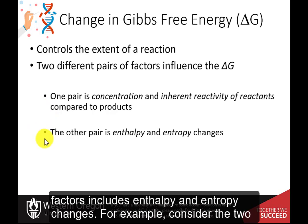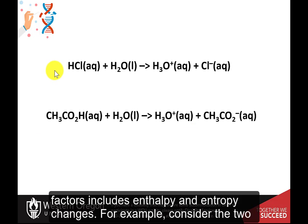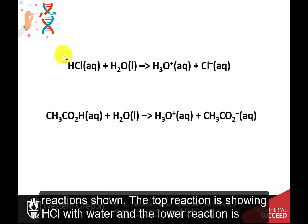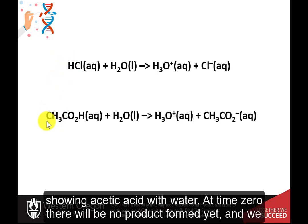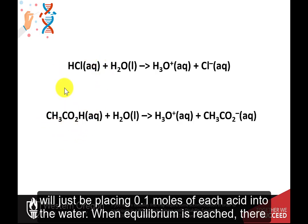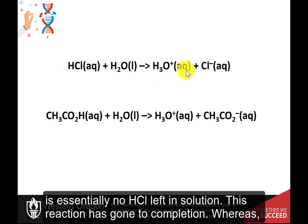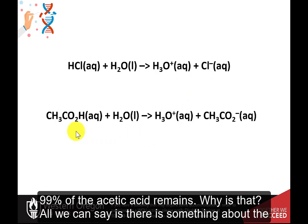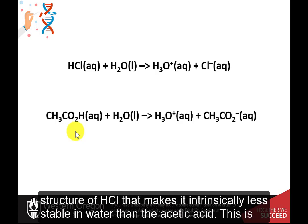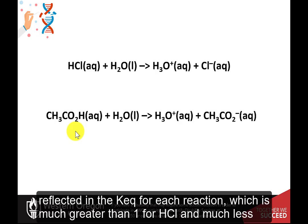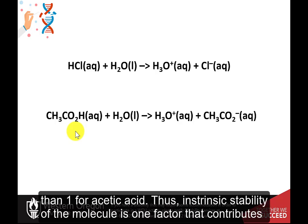The second pair of factors includes enthalpy and entropy changes. Consider the two reactions shown: the top reaction shows hydrochloric acid with water, and the lower reaction shows acetic acid with water. At time zero, placing 0.1 moles of each acid into the water, when equilibrium is reached, there is essentially no HCl left in solution — this reaction has gone to completion — whereas 99% of the acetic acid remains. This is reflected in the K-Equilibrium for each reaction, which is much greater than 1 for HCl and much less than 1 for acetic acid. Thus, intrinsic stability of the molecule is one factor that contributes to delta G.